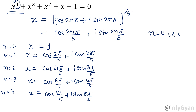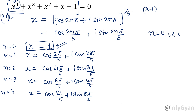For n equal to 0, x equals 1 is the very first solution. However, that comes from the factor x minus 1 which we multiplied at the beginning. We multiplied x minus 1 with the whole equation, so x minus 1 equal to 0 gives x equal to 1. That is not from our original equation, so we will not focus on that solution. Our original equation was degree 4, so the remaining 4 solutions come from n equal to 1 up to n equal to 4.